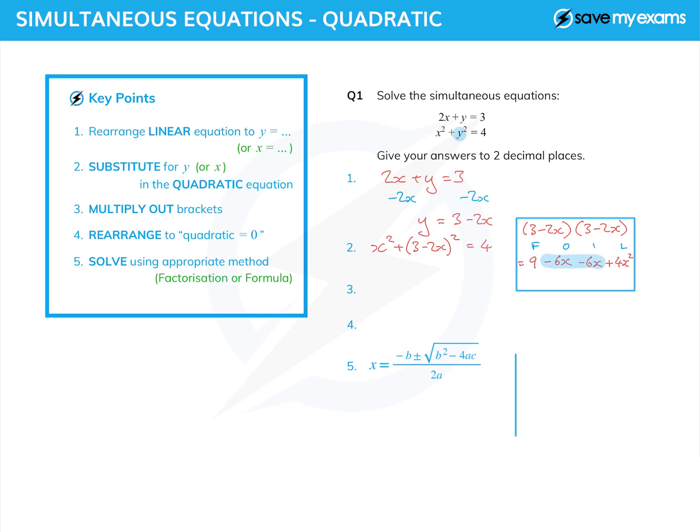And then the last term in each bracket is minus 2x times minus 2x, which is plus 4x squared. The two terms in x, take away six, take away another six is take away 12. So I get nine minus 12x plus 4x squared.